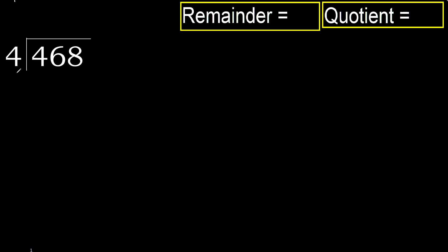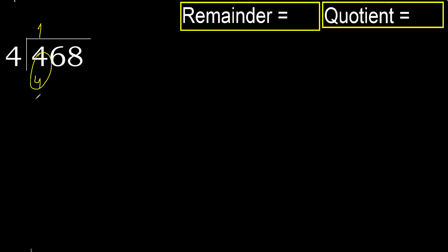468 divided by 4. 4 is not less, therefore with 4. 4 multiplied by which number is nearest to 4 but not greater? 4 multiplied by 2 is 8, which is greater. Multiply by 1. 4 is not greater. Ok, subtract.